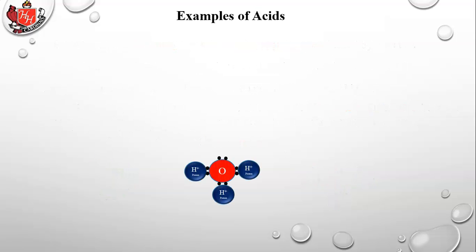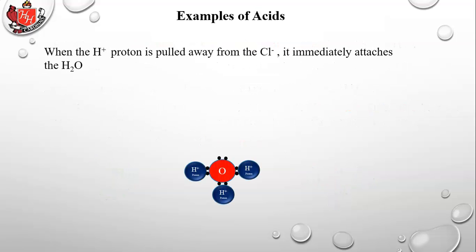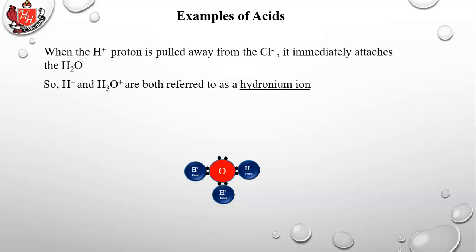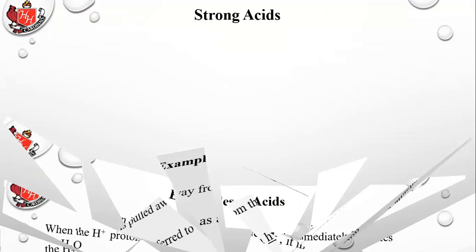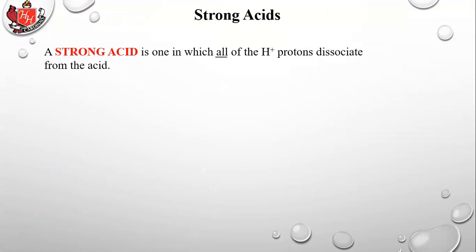When the H+ proton is pulled away from the hydrochloric acid, leaving Cl- behind, it immediately attaches to H2O. So H+ and H3O+ are both referred to as hydronium ions and are treated as the same. The AP standards prefer the H3O+ symbol for hydronium. A strong acid is one in which all of the H+ protons dissociate from the acid.